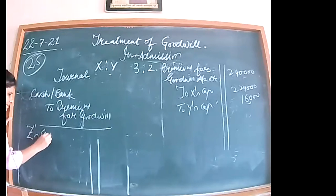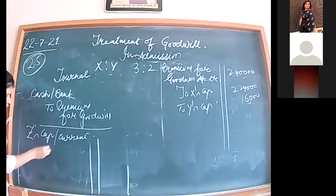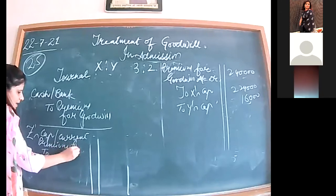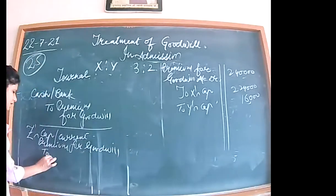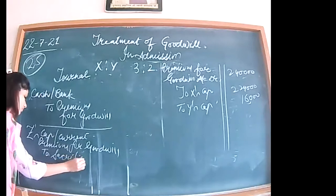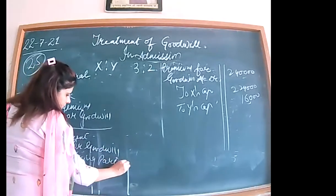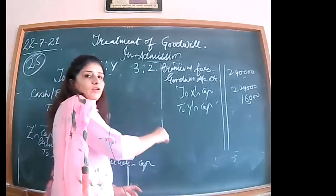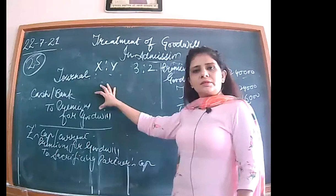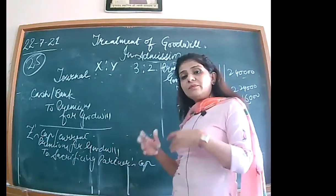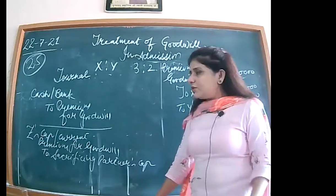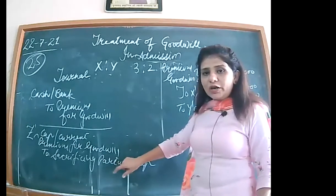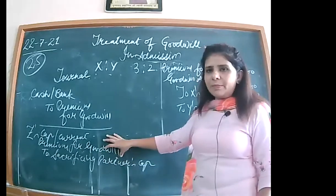For the portion he is not bringing, Z's capital account or current account is debited to premium for goodwill — because we still need to deal with the sacrificing partners via the second entry. The rule is: whatever he brings, just debit it; whatever is the deficiency, extract it from his capital or current account. The sacrificing partners need the full goodwill amount transferred to them regardless.